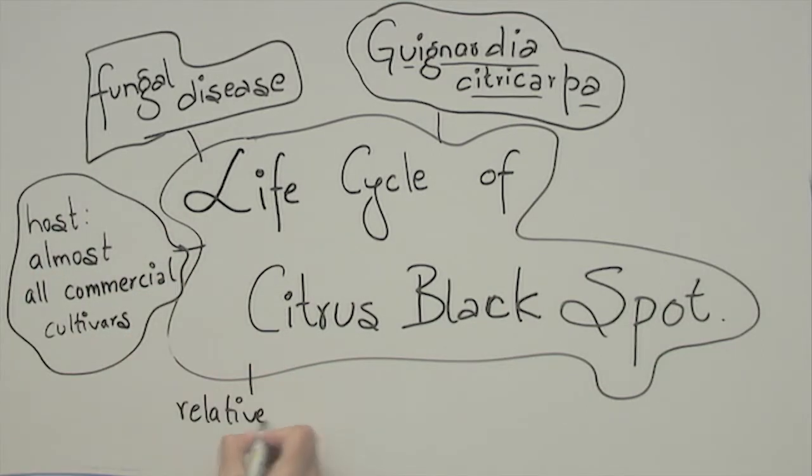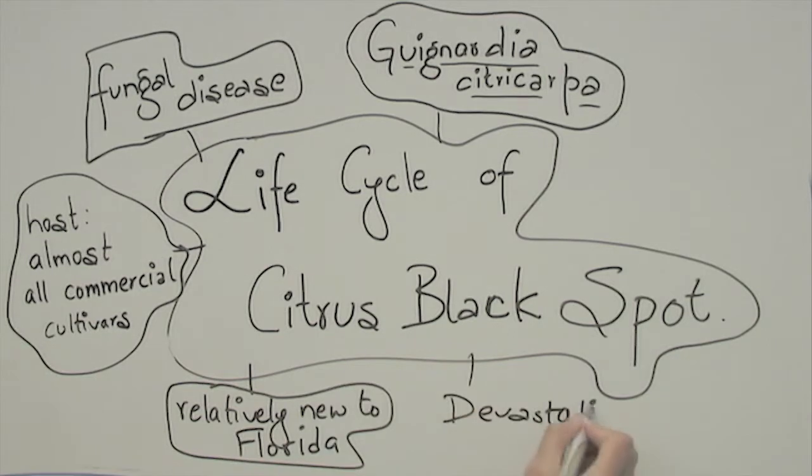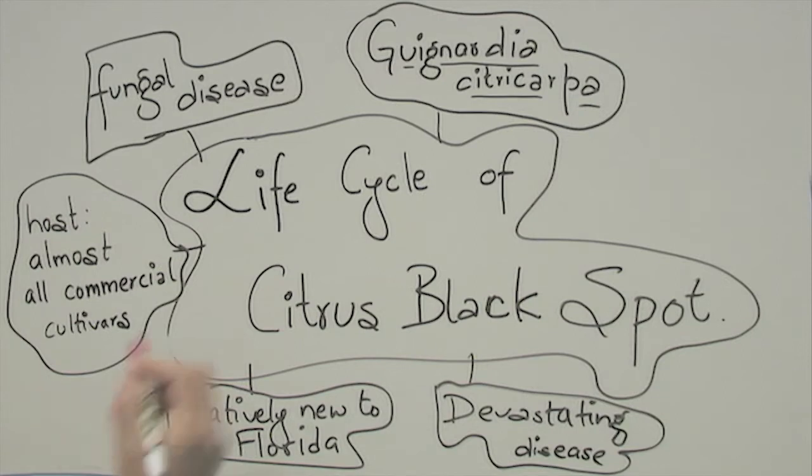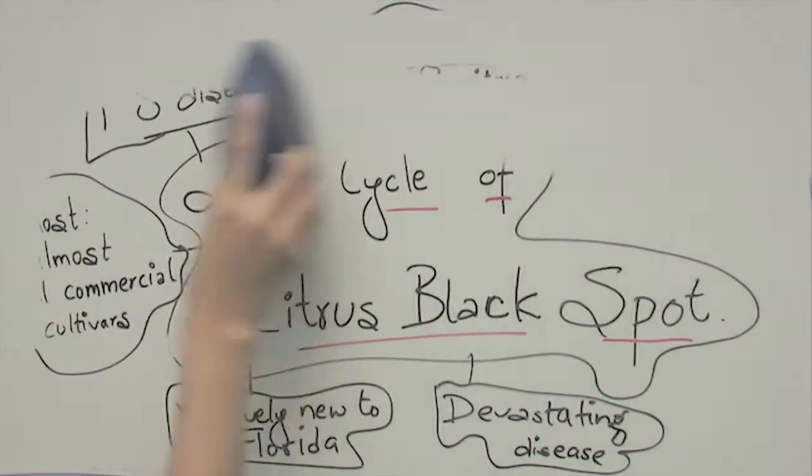It's fairly new to Florida. It was found in 2010 near the Immokalee area and is a very devastating disease in humid subtropical citrus-producing countries like Australia, South Africa, Brazil, China, and so on.